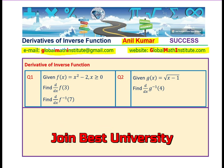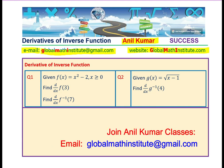Let us look into how do we find derivative of inverse functions at a given point. The two questions are: question 1, given f of x equals to x square minus 2 where x is greater than equal to 0, find the derivative f prime of 3 and find derivative f inverse prime of 7.